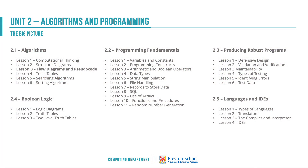Where does that sit within our big picture? Unit two is made up of five key sections and this is early on in the first section. 2.1 is all around algorithms, and this is the third lesson in that series.